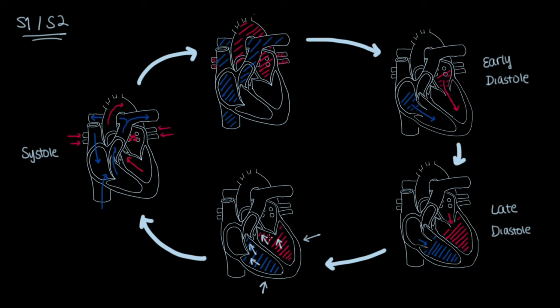In the right ventricle, this means that the blood pushes against the tricuspid valve, which closes, and the pulmonic valve, which eventually opens. In the left ventricle, this means that the blood pushes against the bicuspid or mitral valve, which closes, and the aortic valve that eventually opens.